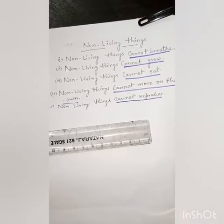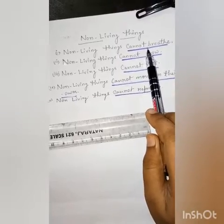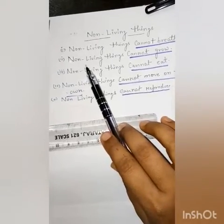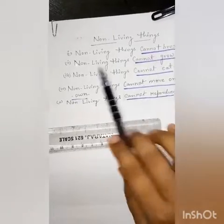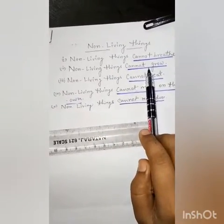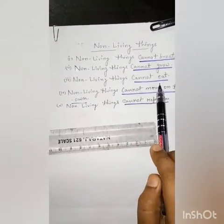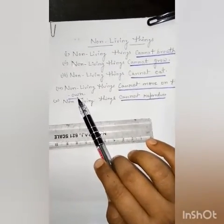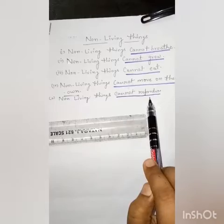Now, how can we identify non-living things? Firstly, non-living things cannot breathe. Like table, chair, car, trains — these non-living things cannot breathe. Non-living things cannot grow. Non-living things cannot eat — ajeevit vastu khaa nahi sakti. Non-living things cannot move on their own — ajeevit vastu khud se ek jagah se doosri jagah nahi ja sakti. And non-living things cannot reproduce — prajanam nahi kar sakti.